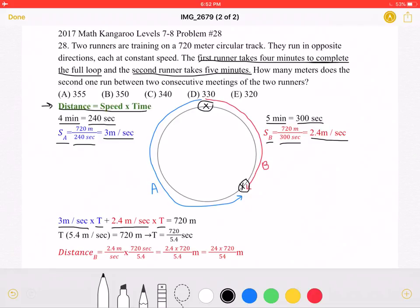And again, the time for both runners must be the same because they start running at the same time. And the sum of these two distances must be equal to the total length of the track, which is 720 meters.